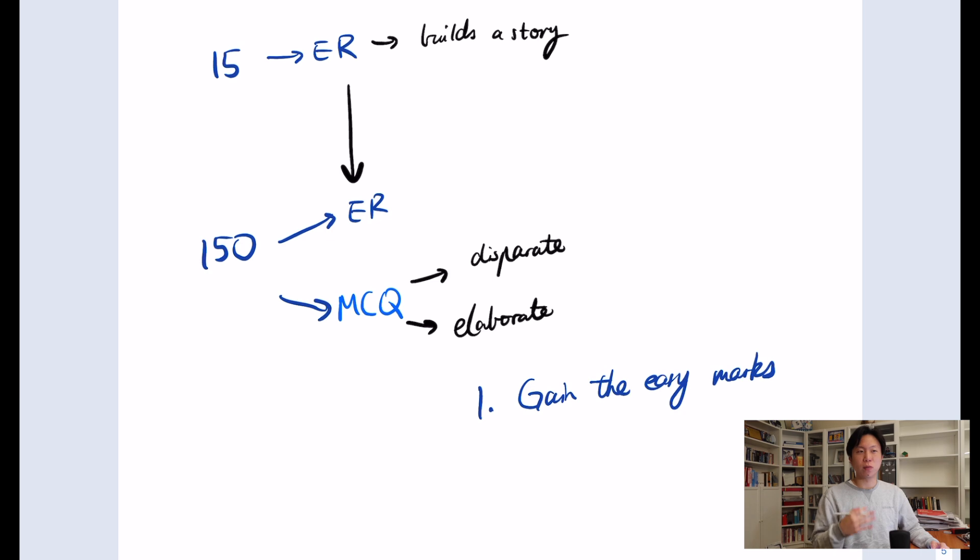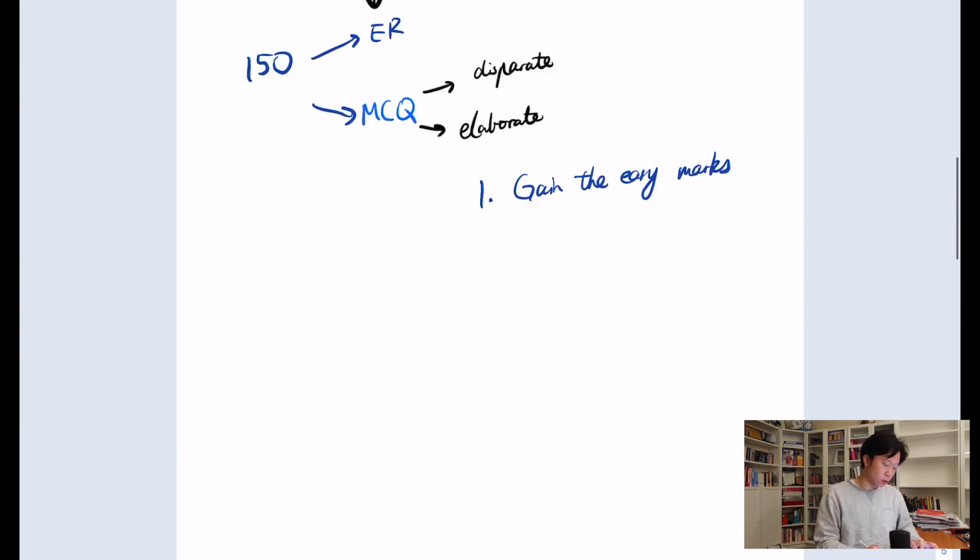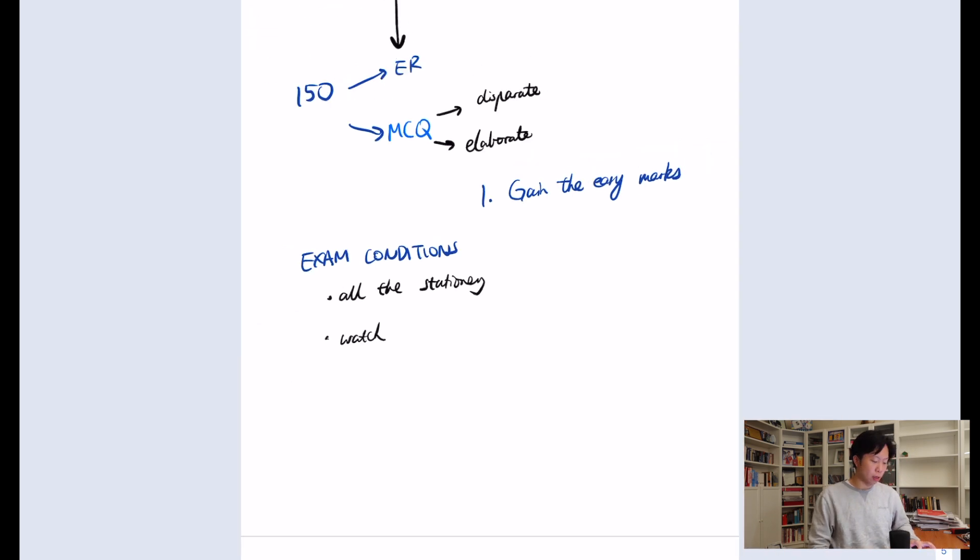If you complete 1a, 1b, 2a, 2b, 3a, 3b, that's a pretty good effort rather than spending too much time on the last part of a certain question. And in addition to all these timings, the usual things apply. So really sit in the exam in exam conditions, so with your scientific calculator, whichever one you're using, with all the tools you have, so all the stationery and with your watch as well. And yeah, I think that's it with what I wanted to talk about with timings.